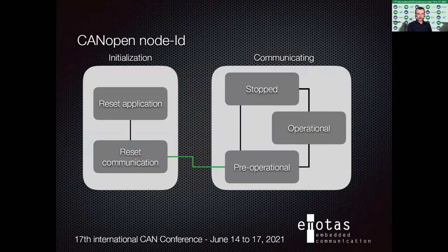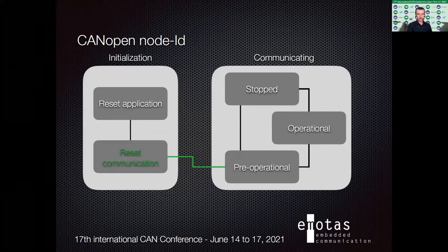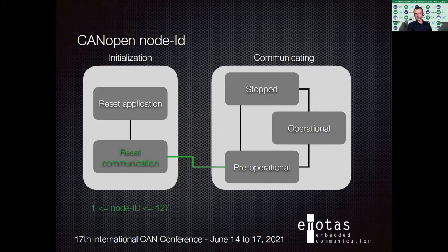A CAN open Node-ID actually enables you to switch from the initialization state in CAN open to the communication state. The problem is if the device doesn't have a Node-ID, it would get stuck in the sub-state reset communication. If you're familiar with CAN open, you know what I'm talking about — you're not able to communicate at all via CAN open without a Node-ID. The reason is that in this sub-state there is a check defined: if your Node-ID is in the range from 1 to 127, then you're able to leave the reset communication state and enter the pre-operational state, which is the default first communicating state of a CAN open device.